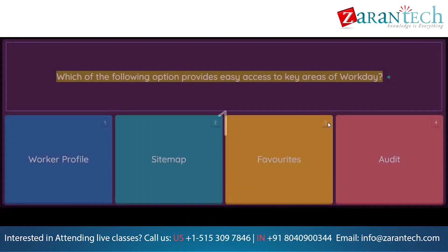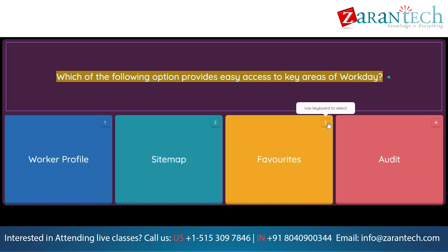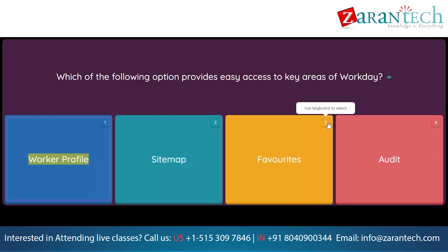Which of the following option provides easy access to key areas of Workday? Option 1: Worker Profile. Option 2: Sitemap. Option 3: Favorites. Option 4: Audit.